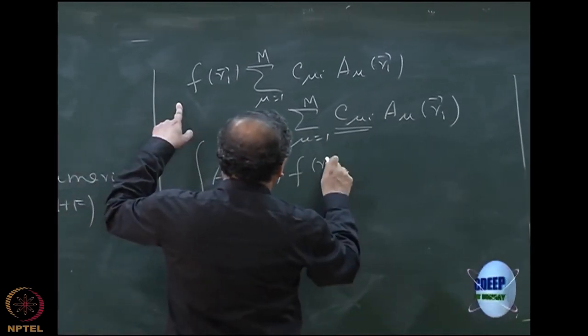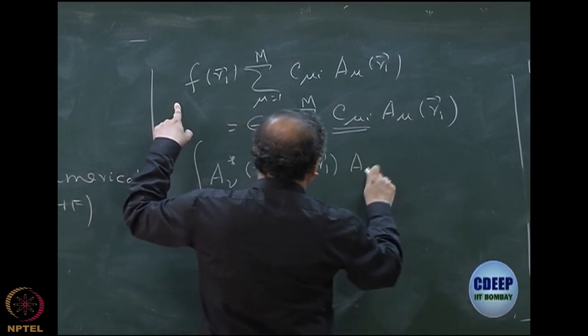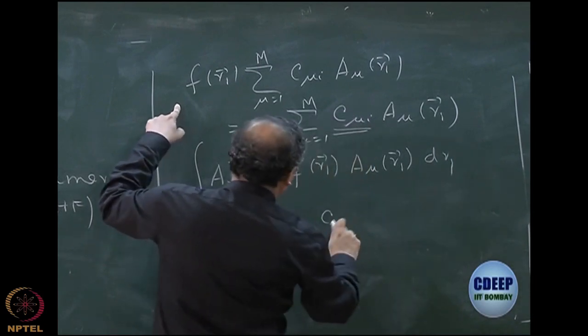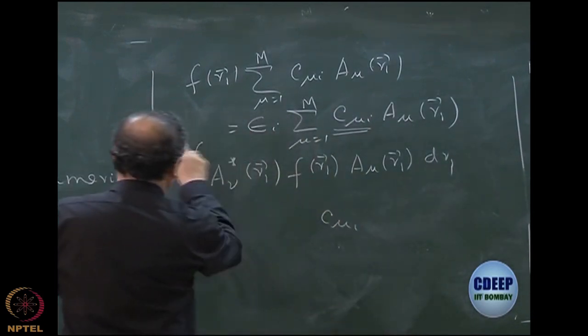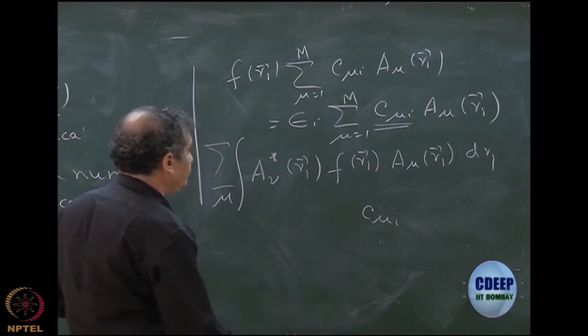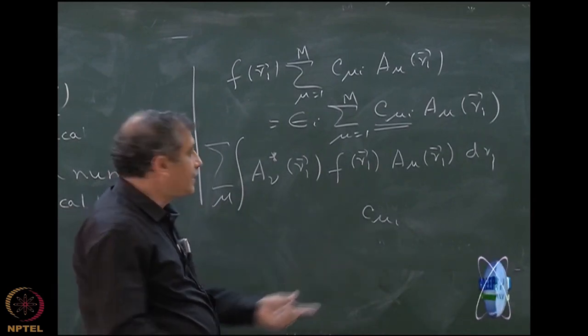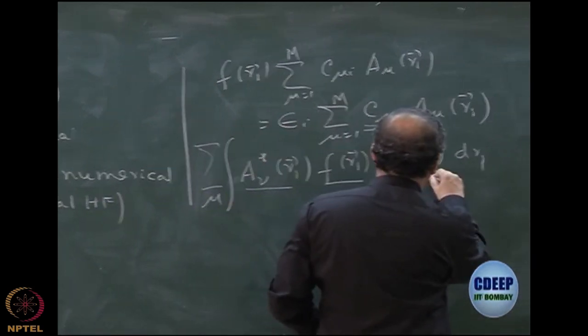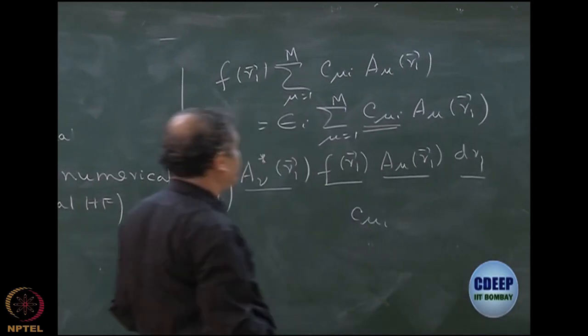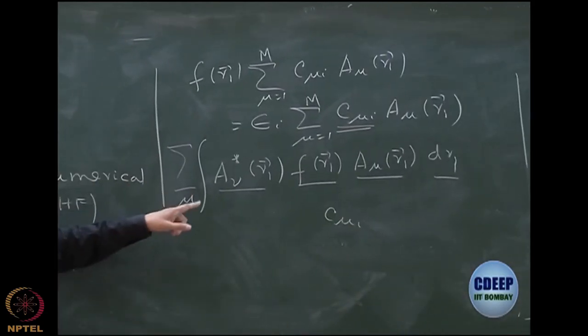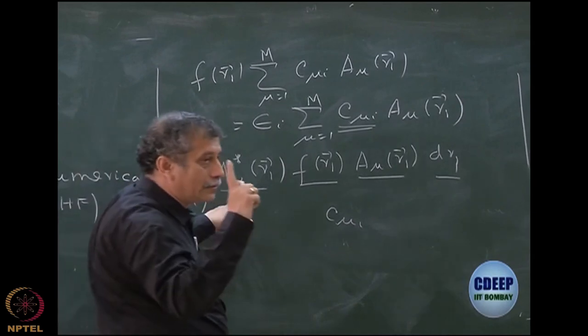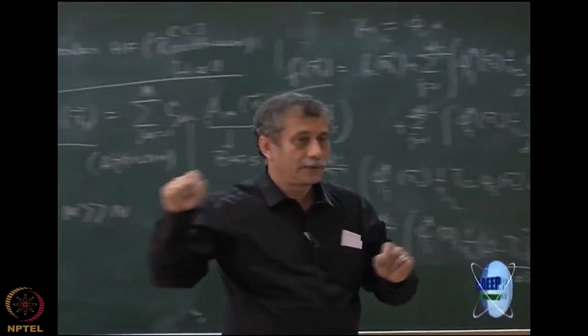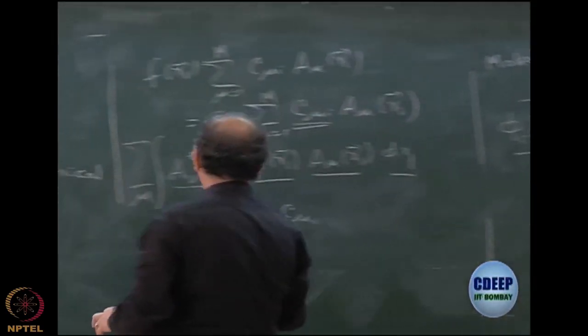A nu of R1 and then integrate over dR1, multiply by C mu of I, sum over mu we can bring outside. This is number, so they can come out to the integration sign. So the integration is over A nu star R1, F of R1, A mu R1, dR1 multiplied by C mu of I. So for a given nu, the nu is fixed. So I am multiplying by a particular A nu right now.